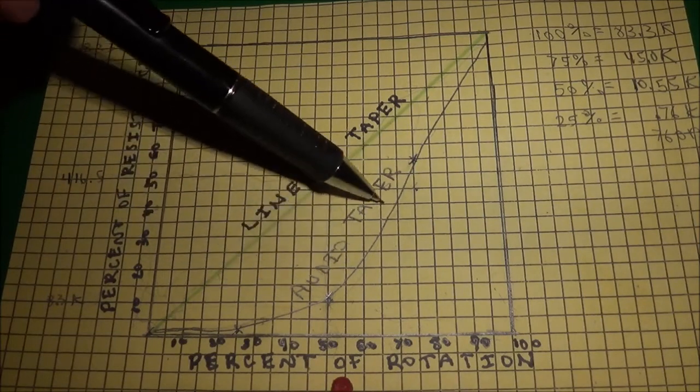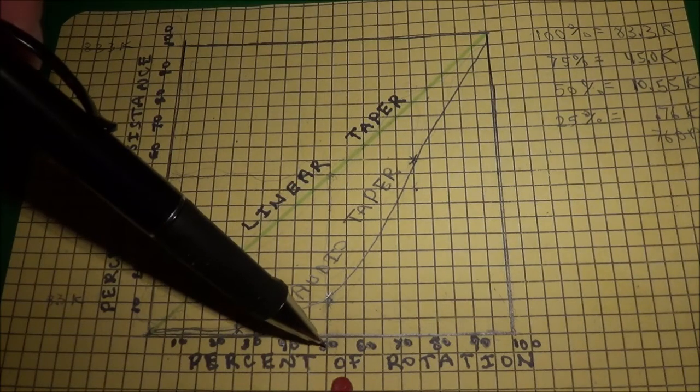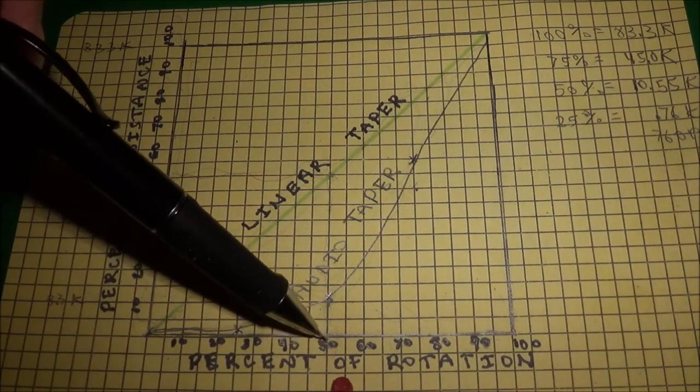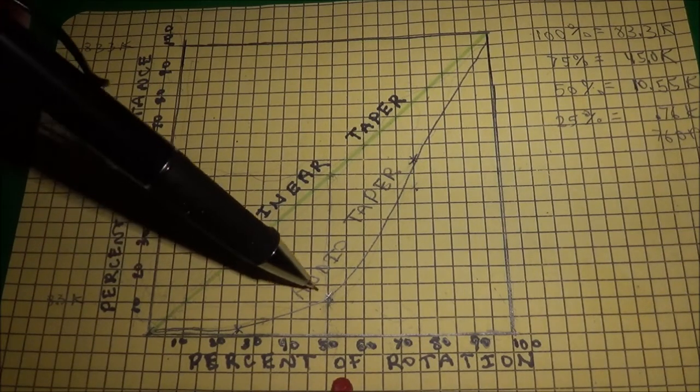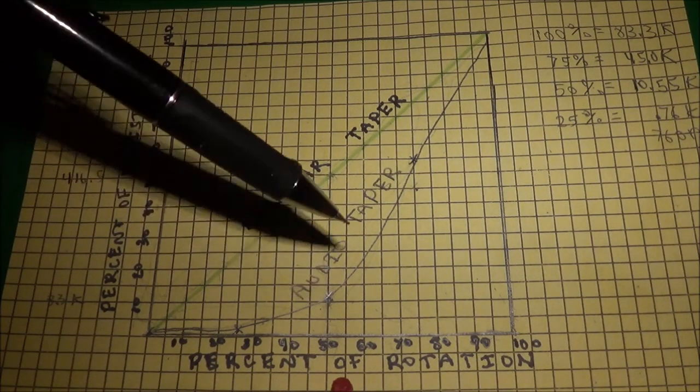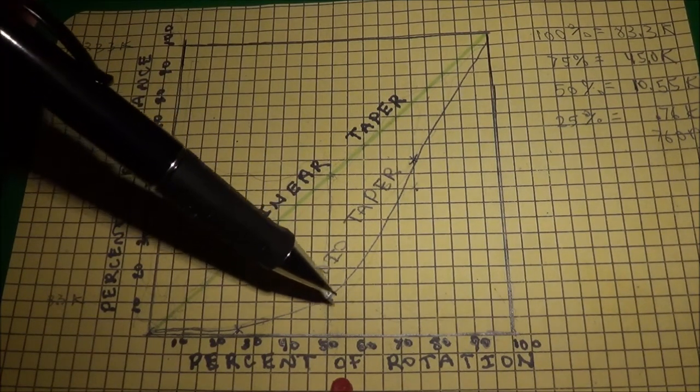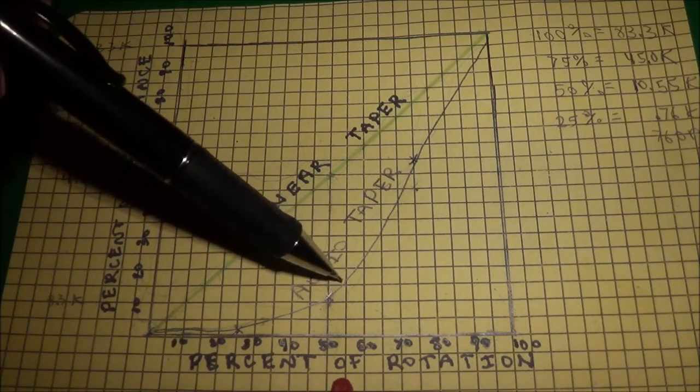Of course, the audio taper now looks completely different. I think this one had like at 50% of the rotation of the volume control, it had around I think it was around 12% of the total resistance. So we could say, for example, if it would have 12%, then we would say this would have an audio taper of 12%.